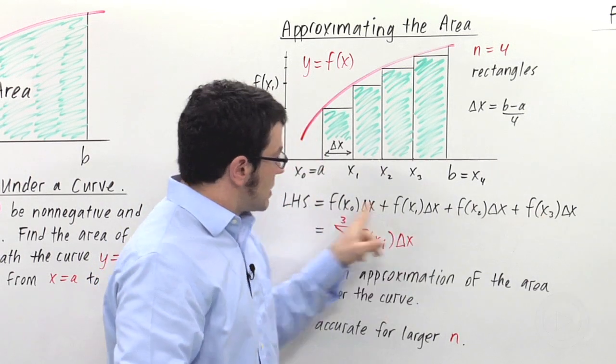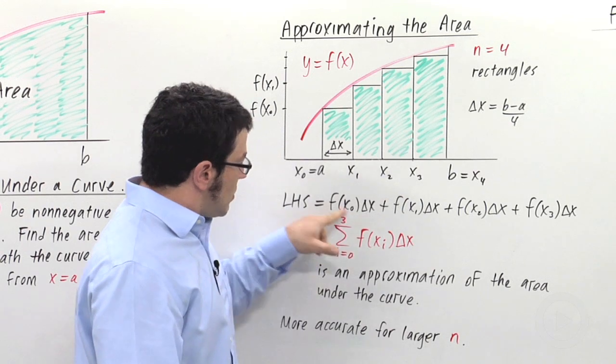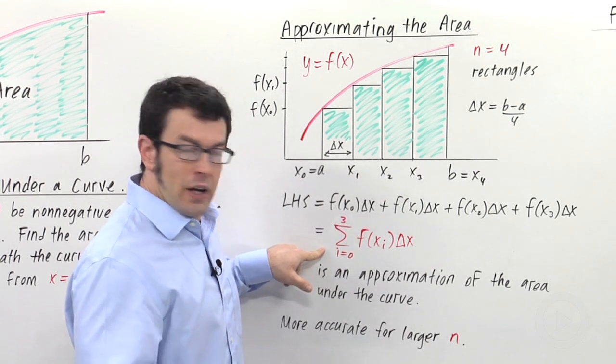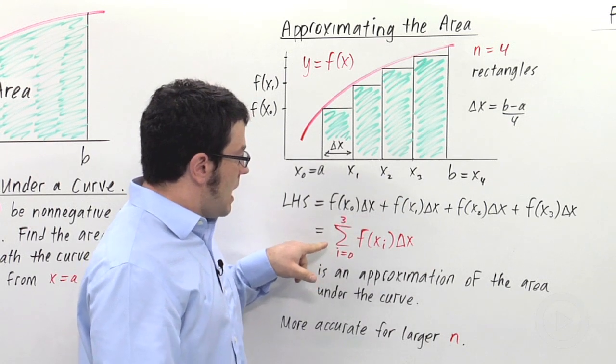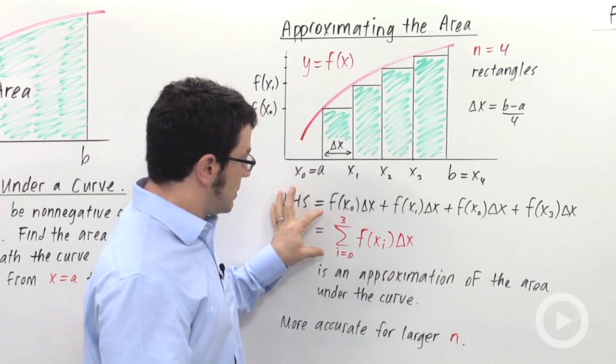So we sum from 0 to 3. There are four rectangles here, but we're summing from 0 to 3. That's a little confusing. This is the way that summation is written in shorthand. This is called sigma notation. And when the sums have a lot of terms, it's much more convenient to use this notation, even though it's a little confusing.